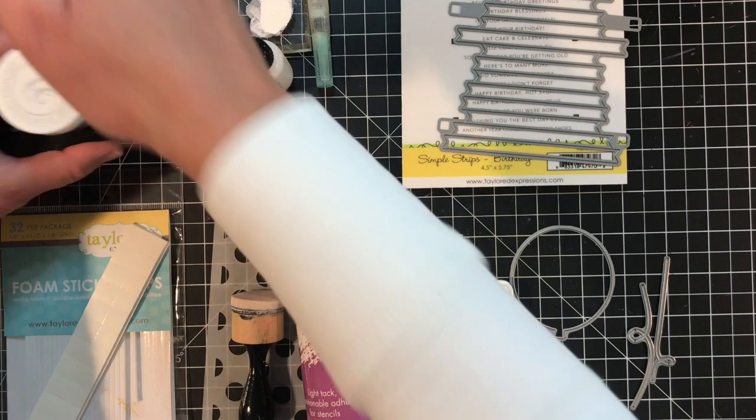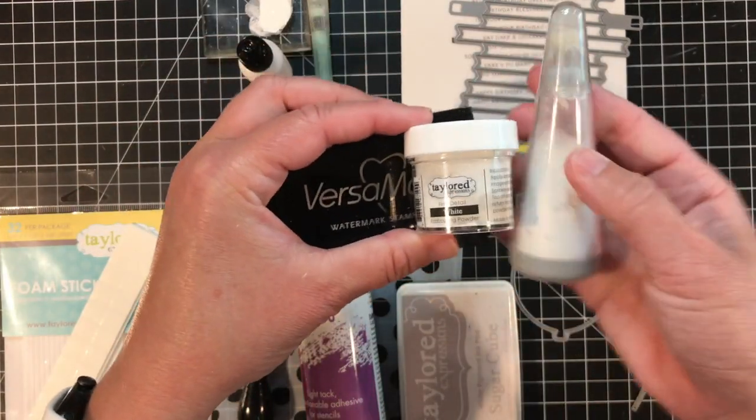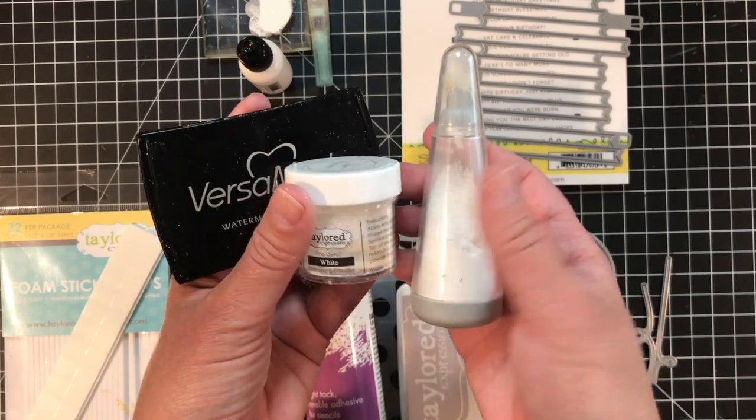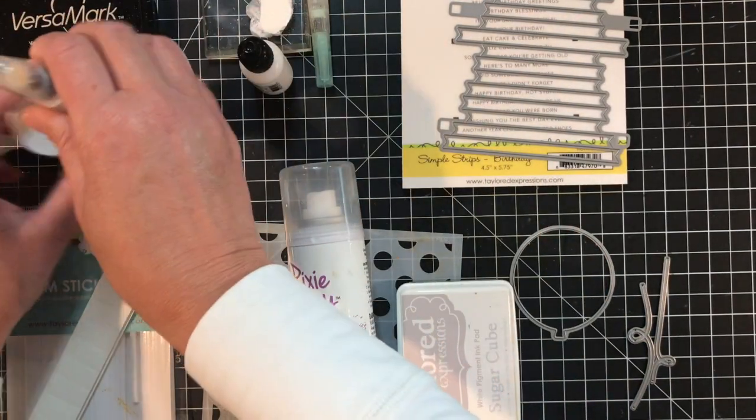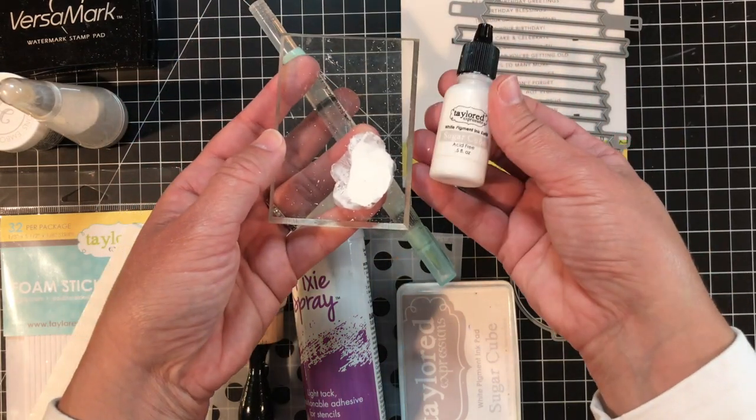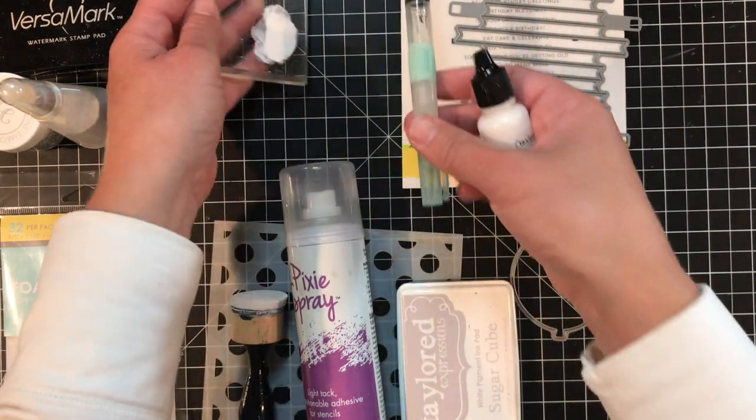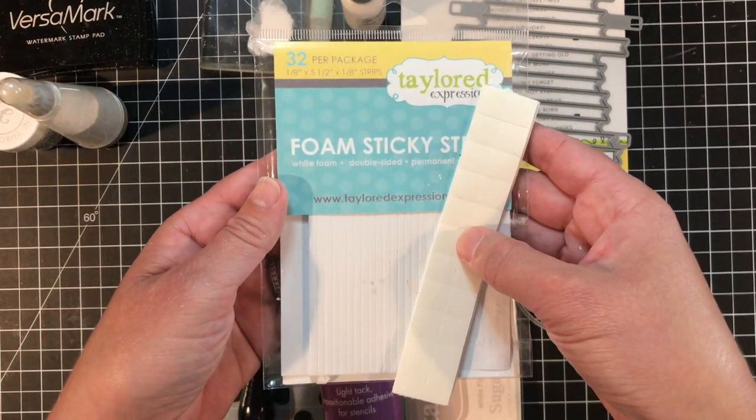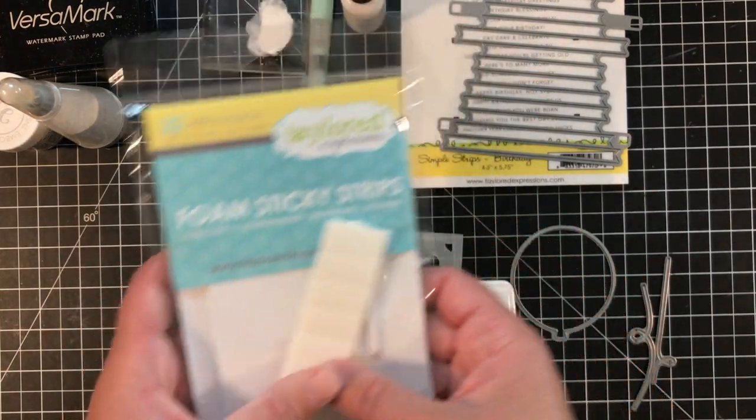I'll be doing some heat embossing so I have my white embossing powder, my Versamark ink and my powder tool. I'll also use my heat tool to melt the embossing powder. I'll add some ink spatters to my project using Sugar Cube ink refill and an acrylic block and a water brush. And finally for an adhesive I'll be using the foam squares along with the foam sticky strips.